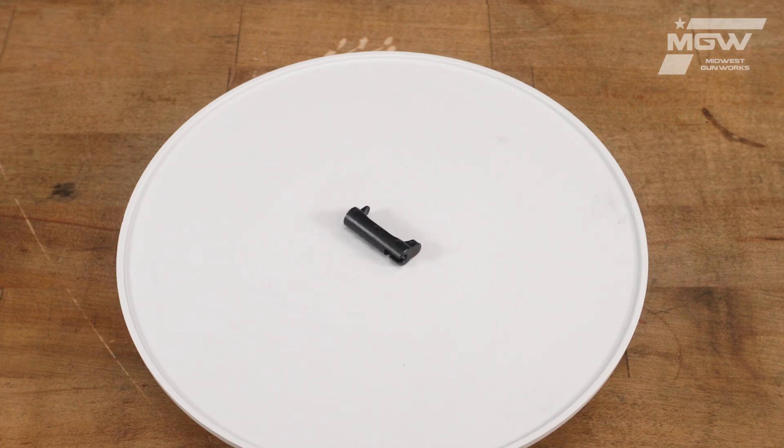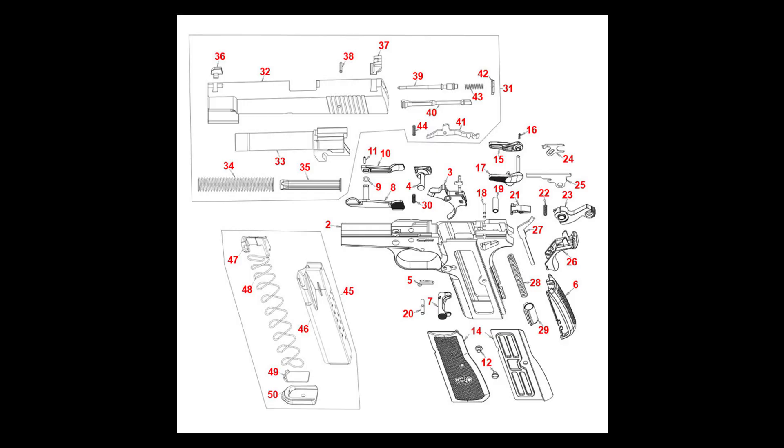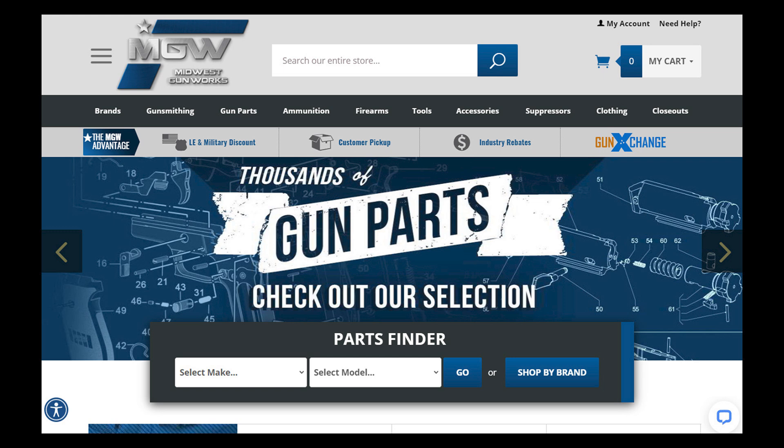You can find this magazine latch body on our FN High Power part schematic page under the number 7 or by searching its product code in the top search bar of our site.